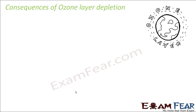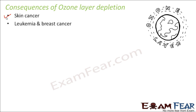Let us look at some of the consequences of ozone layer depletion. One important consequence would be skin cancer — when skin gets exposed to ultraviolet radiation, skin cancer can happen. There are also increased chances of leukemia and breast cancer, because the high energy of ultraviolet radiation is very harmful to cells. Additionally, DNA and proteins have the tendency to absorb ultraviolet radiation, and together these effects can damage cells and cause cancer.